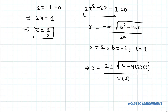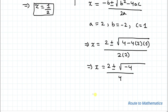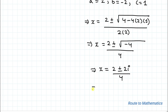Substituting the values, x equals 2 plus or minus root of (4 minus 4 times 2 times 1) divided by 4, which gives 2 plus or minus root of (4 minus 8) divided by 4. This simplifies to 2 plus or minus root of (minus 4) divided by 4, which is 2 plus or minus 2i divided by 4. Dividing through by 4 gives x equals 1/2 plus or minus i/2.